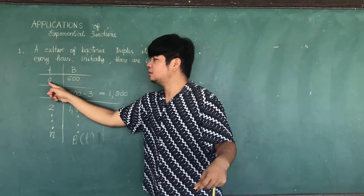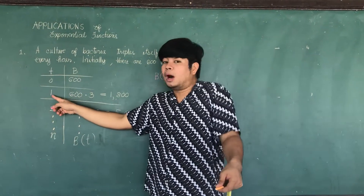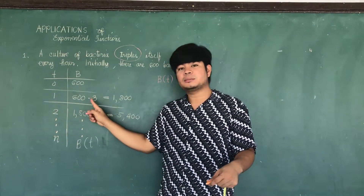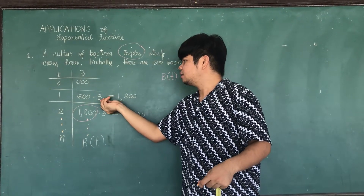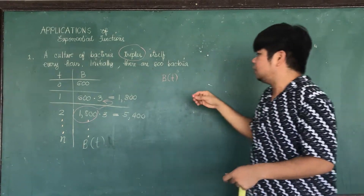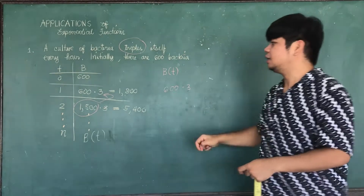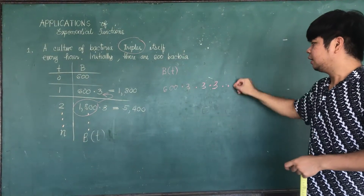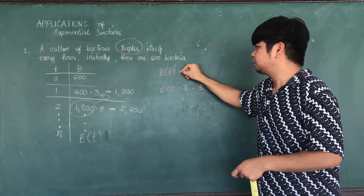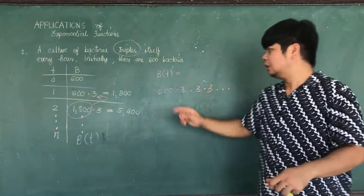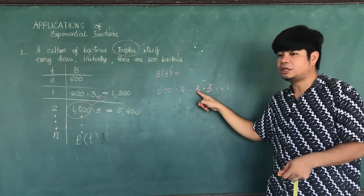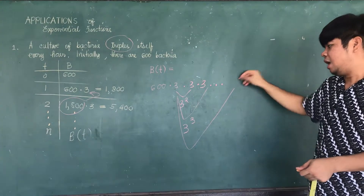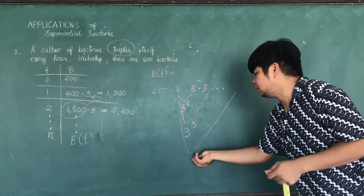Observing the pattern: when time is zero, there are 600. When time is one, it triples — 1,800 is the product of 600 times three. On the first hour, multiply by three; on the second hour, three times three becomes three squared; on the third hour, it becomes three raised to three. So for the nth hour, that is three raised to t.